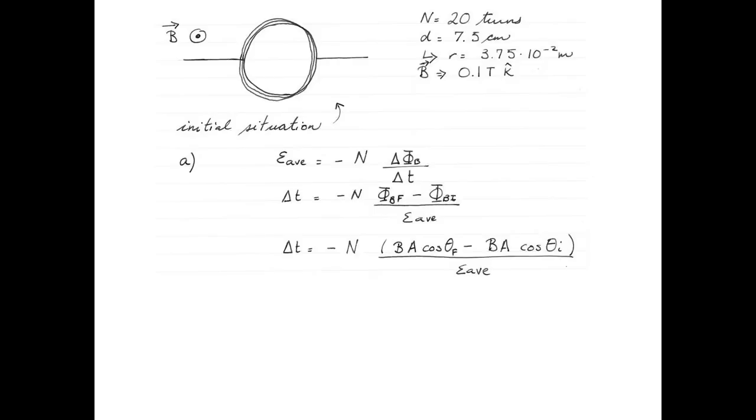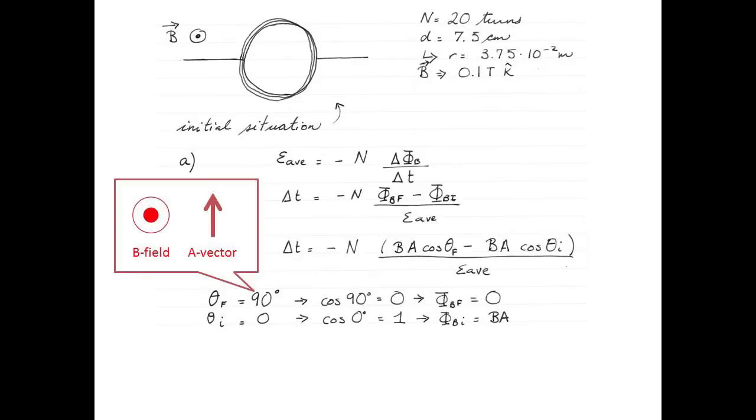The magnetic flux is equal to the magnetic field multiplied by the area of the coil multiplied by the cosine of the angle between the magnetic field and the area vector. Remember, the area vector is at 90 degrees to the area of the coil. The final angle between the magnetic field and the area vector is 90 degrees. This is because the magnetic field is sticking out towards us, and once the coil has rotated, its area vector points towards the top of the page or the top of the screen. Therefore, the magnetic flux is zero because the cosine of 90 degrees is zero.